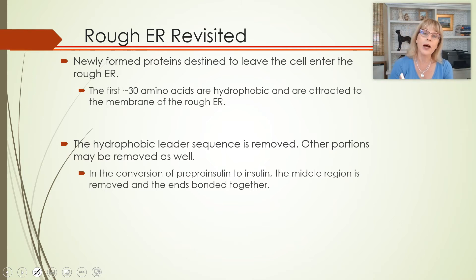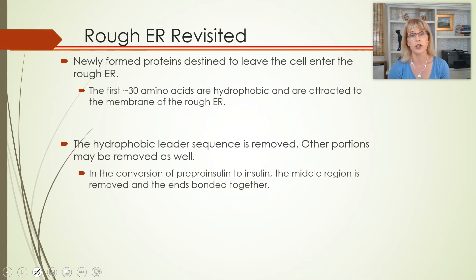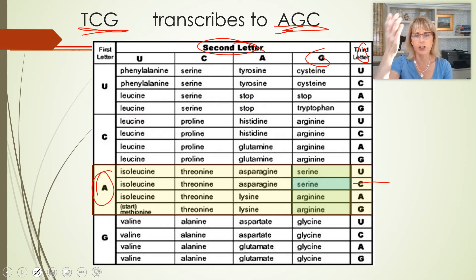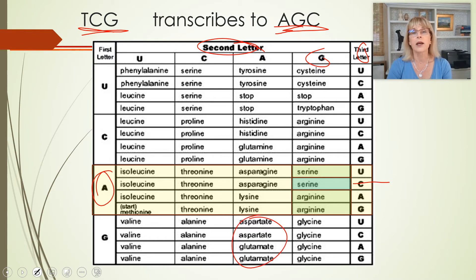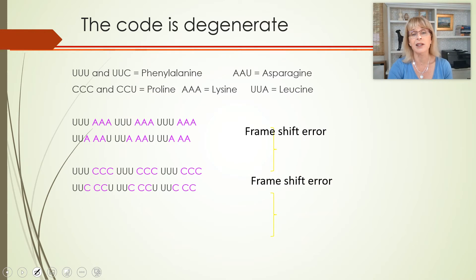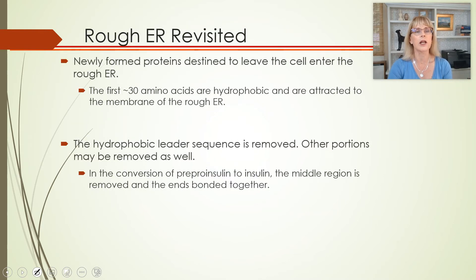Frameshift mutations are extremely bad. By the way, sickle cell anemia is a point mutation. Sometimes point mutations can be bad. With sickle cell anemia, it is the second letter that is mutated — changing the codon from something like CAG to GAG — and that completely changes things. In that case, it's enough to create a fatal problem — fatal in the absence of modern medicine, not fatal with it.